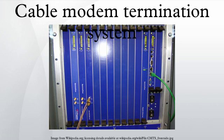One way to think of a CMTS is to imagine a router with Ethernet interfaces on one side and coaxial cable RF interfaces on the other side. The RF coax interfaces carry RF signals to and from the subscribers' cable modem. Most CMTSs have both Ethernet interfaces as well as RF interfaces. Traffic coming from the internet can be routed through the Ethernet interface, through the CMTS, and then onto the RF interfaces connected to the cable company's hybrid fiber coax.